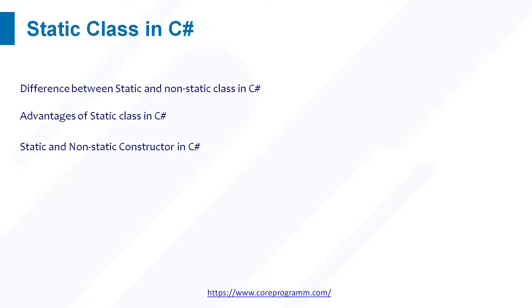On the other hand, the non-static constructor gets executed only when we create an object of that class, and that is true for each and every object of the class. It is not possible to create a static constructor with parameters, because the static constructor is the first block of code which is going to execute under a class, and the static constructor is called implicitly — even if a parameter is there, there is no chance of sending the parameter values.